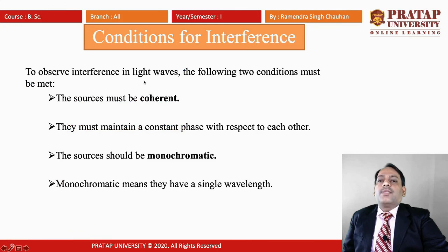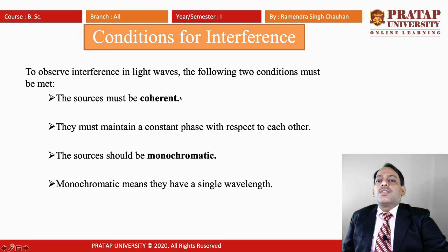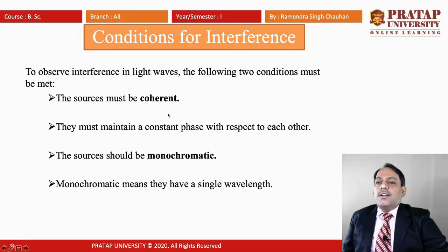Conditions for interference: to observe interference in light waves, the following two conditions must be met. First, the sources must be coherent — they must maintain a constant phase with respect to each other. Coherent means two or more waves traveling with a constant phase difference with respect to time. Phase is the angle traversed by a wave in a given time.